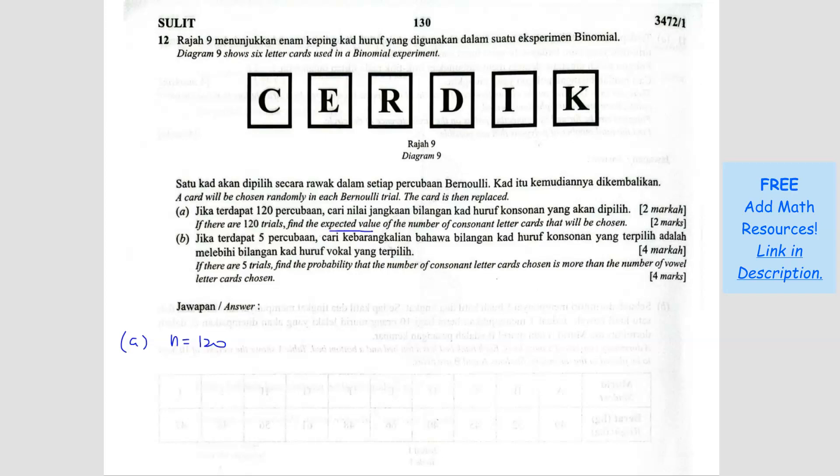Find the expected value. Expected value is the mean of the consonant letters. So how many consonant letters here? 1, 2, 3, 4. You've got 4 consonant letters here.